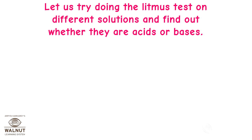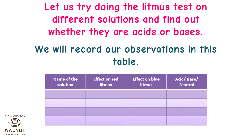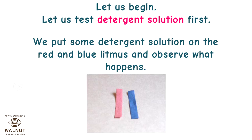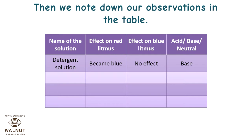Let us try doing the litmus test on different solutions and find out whether they are acids or bases. We will record our observations in a table with the name of the solution, the effect on red litmus, the effect on blue litmus, and our inference — whether the liquid is acidic, basic or neutral. Let us begin with detergent solution. We put some detergent solution on the red and blue litmus and observe what happens. The effect on red litmus was that it became blue, and there was no effect on the blue litmus paper. Therefore, the detergent solution is basic.